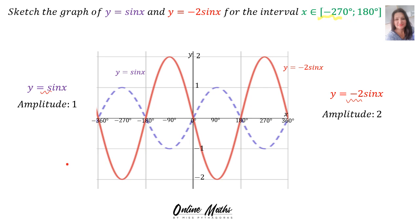My advice to you is: sketch the original graph for the interval minus 360 up to 360, and then erase whatever falls outside of the interval. The interval starts at negative 270, so on your red graph, this is the part that you will erase, and on your purple graph, that's the part that you will erase, so it only starts at minus 270. Your interval ends at 180, so for the red graph and the sin x graph, erase the parts beyond 180. Sketch the original graph and then erase whatever falls outside of the interval.